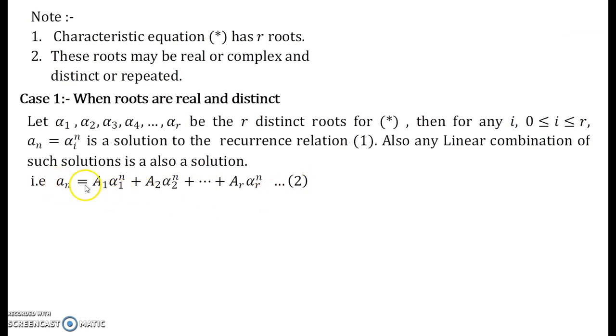So a_n = A₁α₁^n + A₂α₂^n + ... + A_rα_r^n is our solution. That's what we mean by this linear combination is a solution.